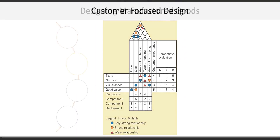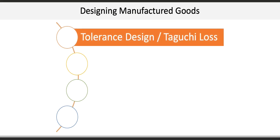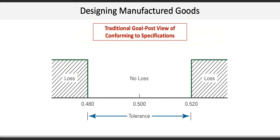The next concept looks at designing manufactured goods and identifies four specific product design activities. The first activity is tolerance design and Taguchi loss. For most manufactured goods, design blueprints specify nominal dimensions along with permissible variation. For example, an O-ring for a valve should be 0.5 cm in diameter with an allowable variation of plus or minus 0.2 cm, giving an acceptable range of between 0.48 and 0.52 cm in diameter.